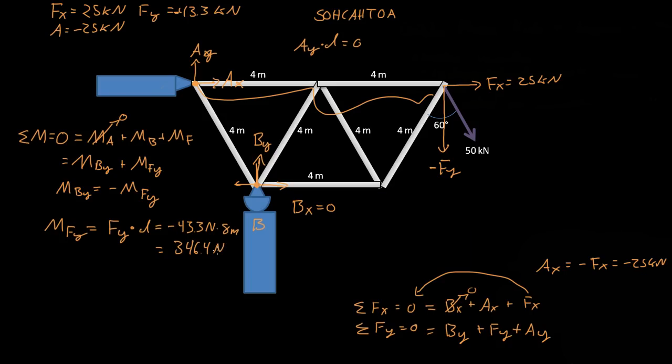So we found what the moment of Fy is. So if we found out what that moment is, then we said that the moment of By must equal the negative moment of Fy. So that's negative, so then the moment of By is a positive 346.4 kilonewton meters.